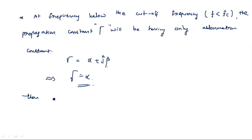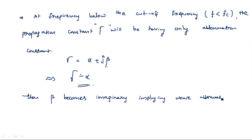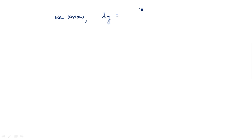Since there is no signal being propagated, beta becomes imaginary, implying wave attenuation. We know that beta equals 2*pi divided by lambda_g (guide wavelength). But below the cutoff frequency it is imaginary, so it becomes j times that value. The guide wavelength lambda_g equals lambda-naught divided by the square root of (1 minus (fc/f) squared).